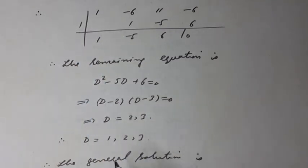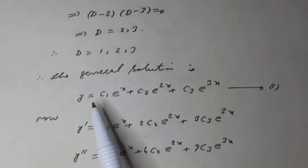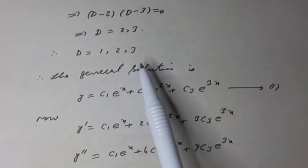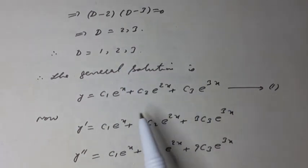Therefore, in this case, the general solution can be written as y is equal to c1 e to the x plus c2 e to the 2x plus c3 e to the 3x, equation 1.